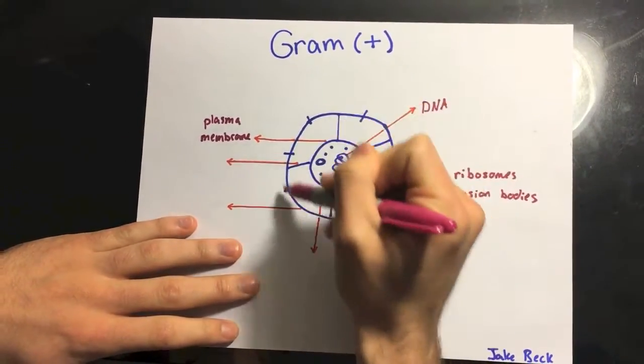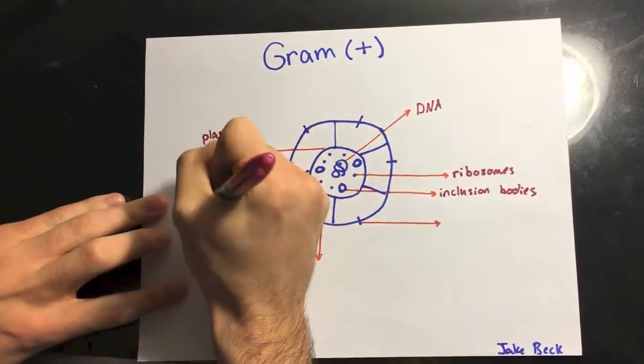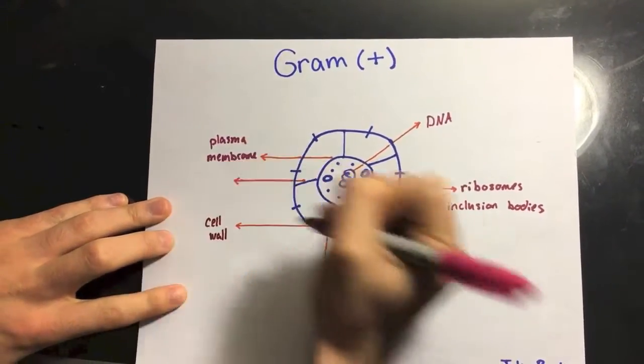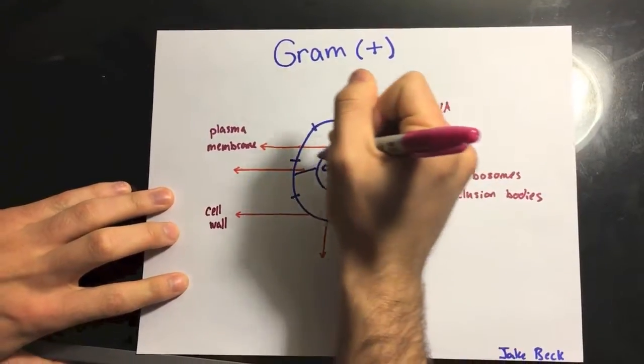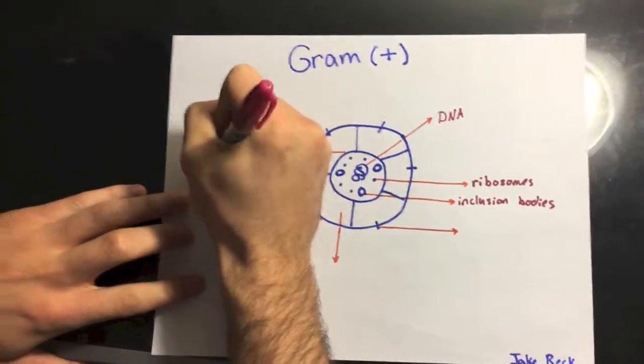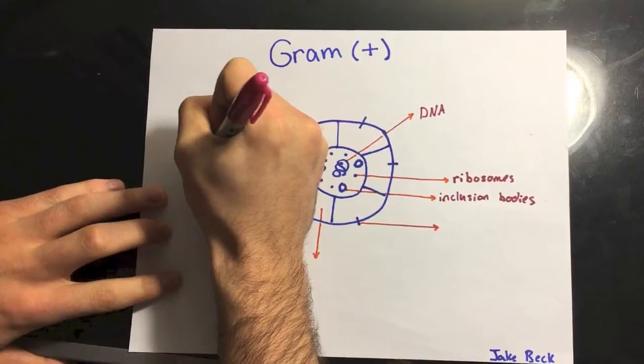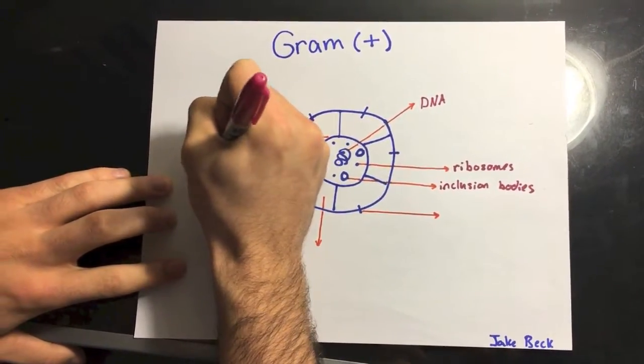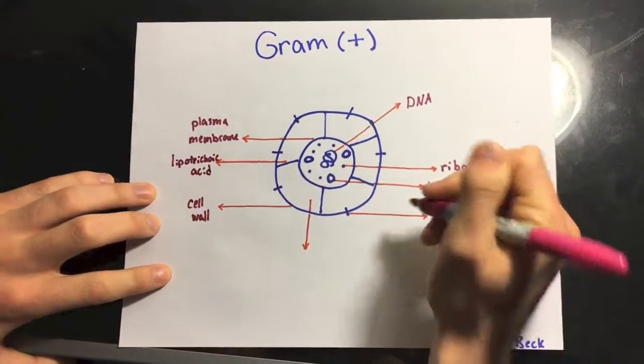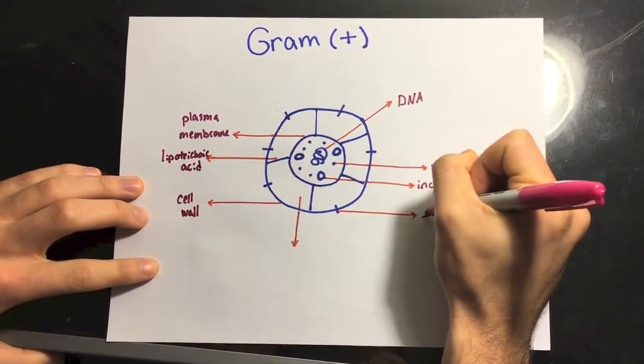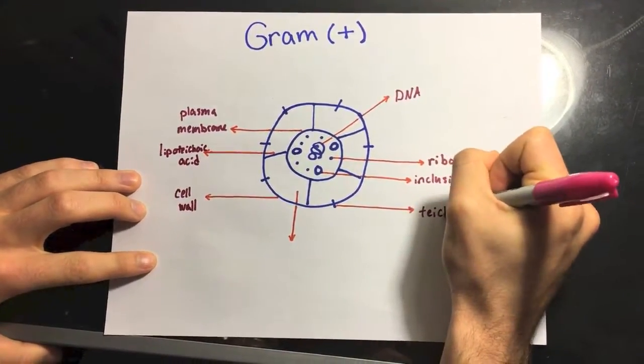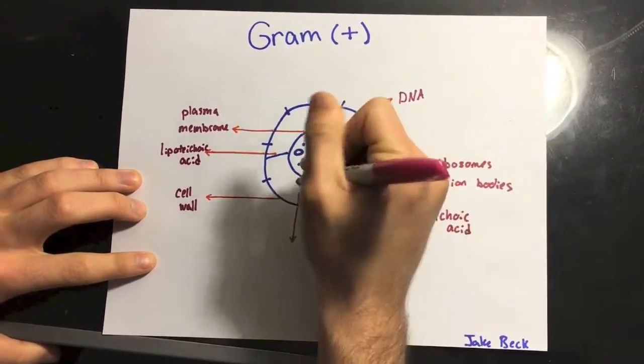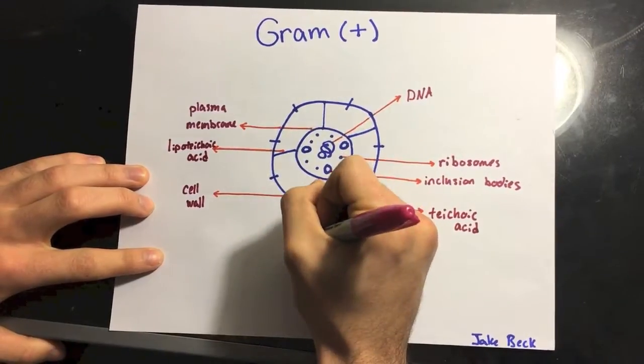After that, I'll draw the cell wall with the lipoteichoic acids and the teichoic acids, with the periplasmic space in the end.